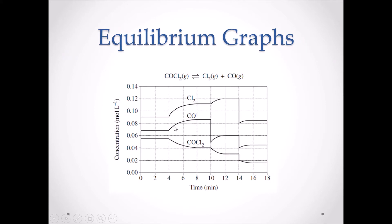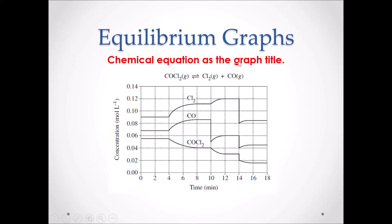An equilibrium graph represents the concentration of each chemical species at equilibrium over time when certain stresses are applied. Within the graph, we can see that each chemical species is represented by an individual line showing its reaction rate. An equilibrium graph requires the chemical equation as the title, and don't forget the axis titles that include the units for concentration on the y-axis and time, either in minutes or seconds, on the x-axis.